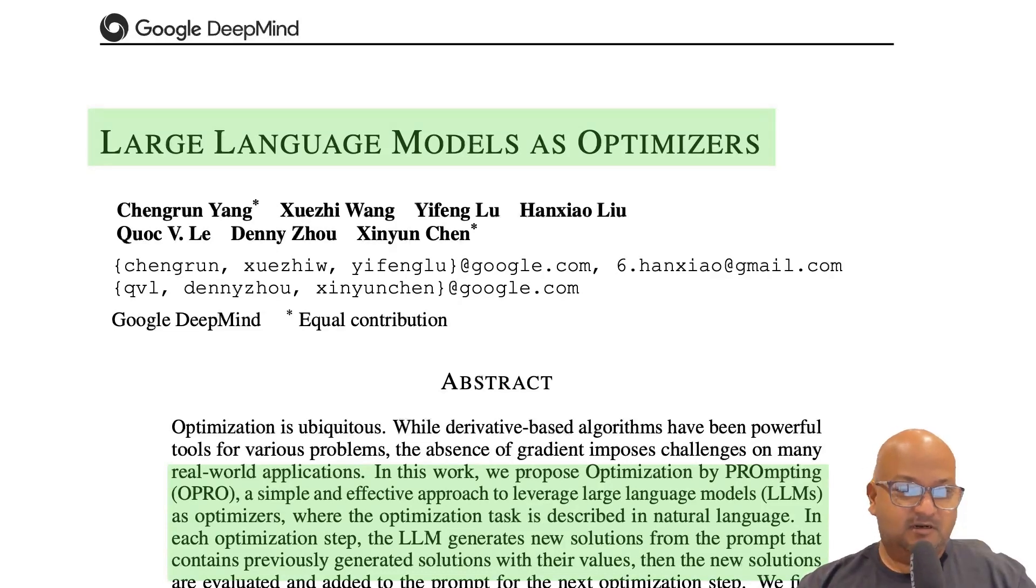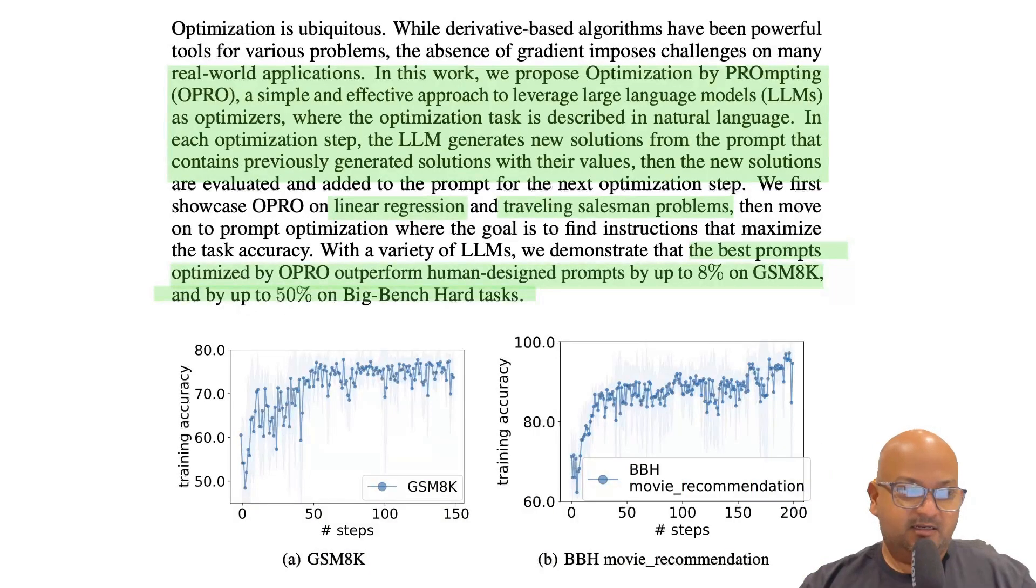Optimization problems are pretty common in real life. The idea is that you have a parameter space that you want to explore and find the parameters that maximize some objective. The key idea of this paper is that you can describe these optimization problems to a large language model in natural language and use it to explore this parameter space and hence find an optimal or near optimal solution.